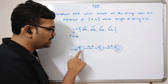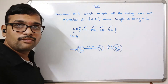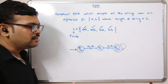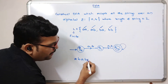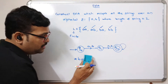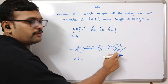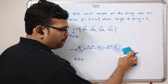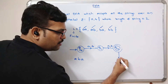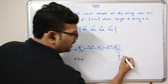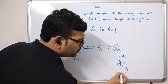This is not yet a complete DFA — q2 has no transitions. If we add a self-loop at q2, strings like 'aba' (length 3) would also be accepted, which is wrong. So we must add a dead state: from q2, on a or b it goes to the dead state, and the dead state loops to itself.